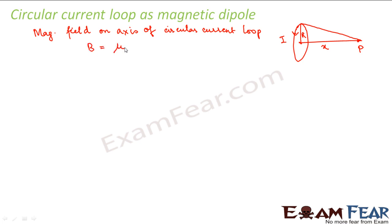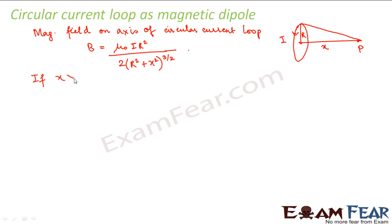The magnetic field on the axis of a circular current loop is given by: B = μ₀IR² / [2(R² + x²)^(3/2)], where x is the position of the point and R is the radius of the circular loop. Now if we assume x is very much greater than R, that is for a point far away from the loop, we can write this as B = μ₀IR² / (2x³), since R² is negligible compared to x².